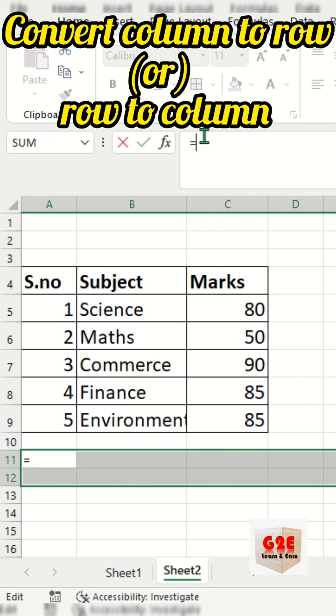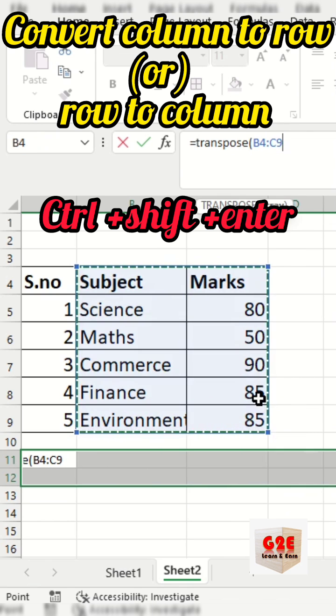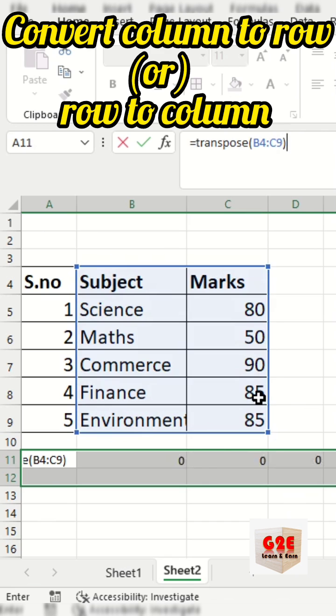Then you can type the formula equals TRANSPOSE and select which cells you want to convert. Here I am selecting the Subject and Marks columns. Close the bracket and press Ctrl+Shift+Enter. If you simply press Enter, you will not get the result.